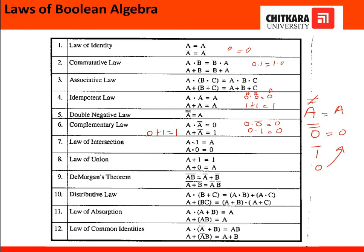Next is the law of intersection: a·1 equals a. For example, 0·1 equals 0, and 1·1 equals 1 — whatever value a takes, that remains the output. Similarly, a·0 equals 0.